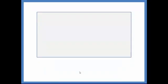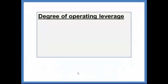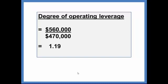Your degree of operating leverage, if you'll remember, is computed by taking contribution margin divided by income. So if you look back in your notes, you'll see that we computed the contribution margin to be $560,000 and the income to be $470,000. So the degree of operating leverage is 1.19.